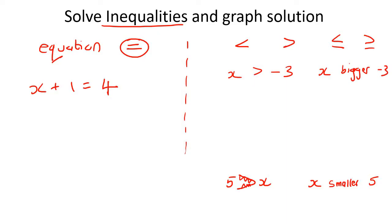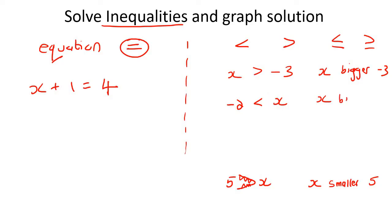Let's do one more. Say we have something like minus 2. You always start with x. Now look at the crocodile's mouth — what is it about to eat? It's about to eat the x. So that means x is the bigger one. And then we say x is bigger than minus 2.